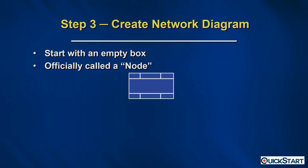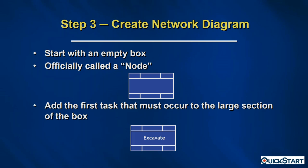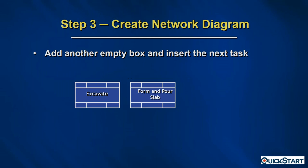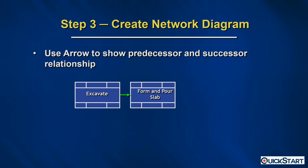Once tasks are identified, step three is to create a network diagram. We start with an empty box called a node. Once we have the node, we add the first task — the task name goes right in the center of that large section of the box. You can see we've got the task 'Excavate.' Then we add another box and insert the next task.